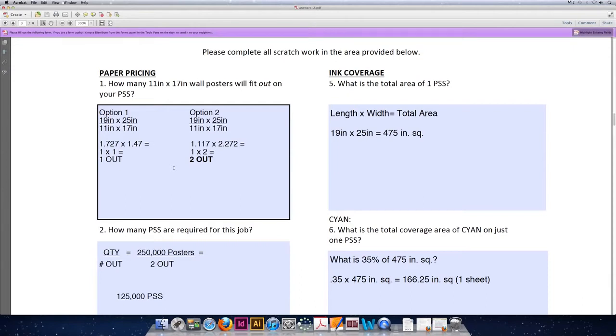The option one scenario comes out to 1.727 by 1.47. Since we can't put part of a wall poster on the press size sheet, we take the whole numbers, 1 times 1, and we figure that only one can fit out that direction. When we rotate the posters 90 degrees, we come up with 1.117 by 2.272. Taking the whole numbers, 1 times 2, we can fit two out on our 19 by 25 sheet of paper.